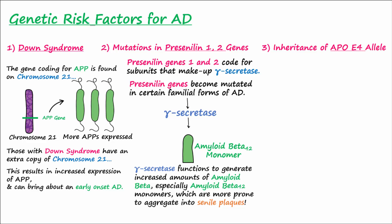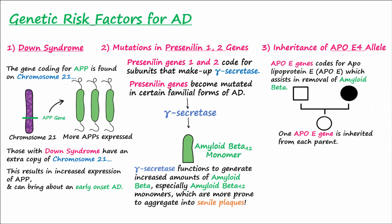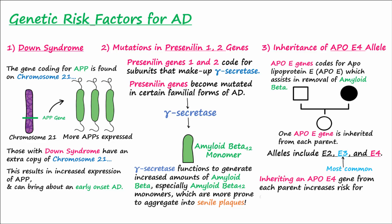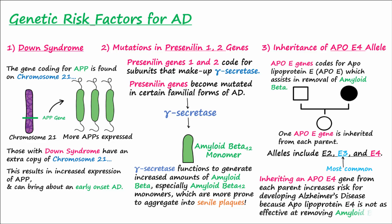Another risk factor is the inheritance of an ApoE4 allele. The ApoE gene codes for apolipoprotein E, or ApoE, a protein that assists in the removal of amyloid beta. Individuals inherit one ApoE gene from each parent. Several alleles exist, including E2, E3, and E4; the E3 allele is the most common, found in more than 50% of the general population. Inheriting an ApoE4 gene from each parent increases the risk for developing Alzheimer's disease because apolipoprotein E4 is not as effective at removing amyloid beta.